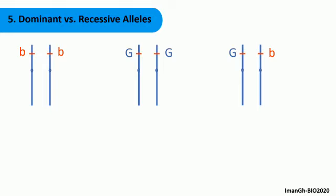Let's consider the following three genotypes that determine the fur color in mice. Letter B stands for the allele coding for the brown color and the G represents the allele coding for gray. The first two genotypes are homozygous.